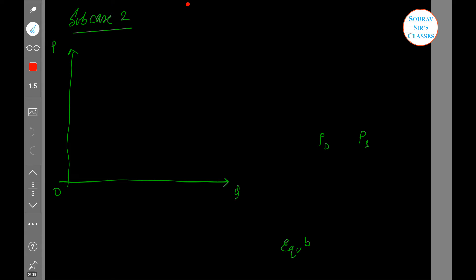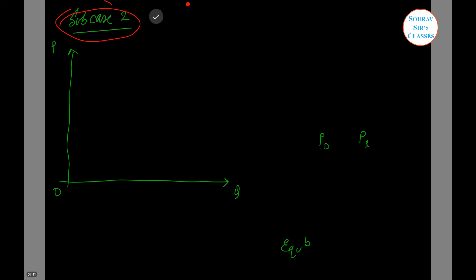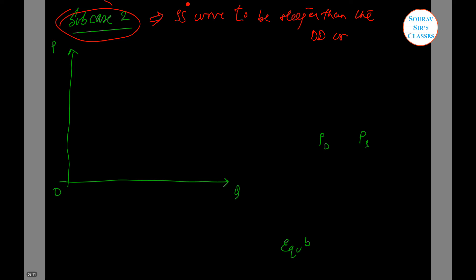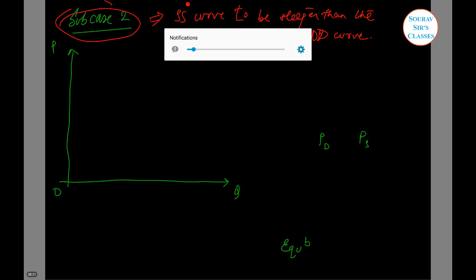Now we move on to sub-case B. Before starting, let me ask: do you think the equilibrium will be stable or not? In sub-case B, we are still under the decreasing cost industry, but we will make the supply curve steeper — it has a greater slope than the demand curve. We have a steeper supply curve and a flatter demand curve.